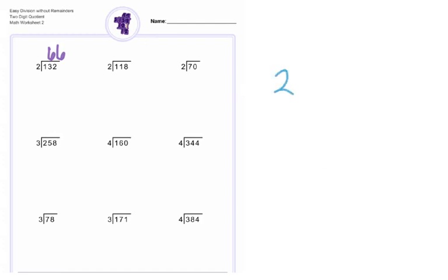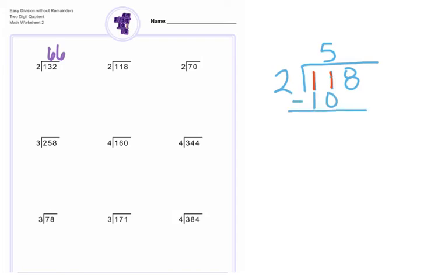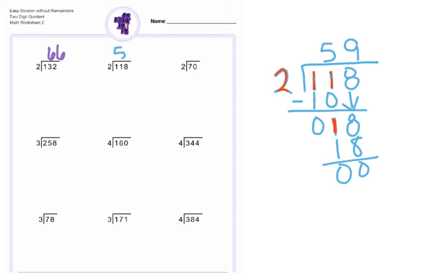Number two, we have 118 divided by two. Can two go into our first number, which is one? It cannot. So we look to the next one: how many times can two go into 11? Two can go into 11 five times because two times five is 10. We do our subtraction — one minus zero is one, and one minus one is zero. Check that the remainder is smaller than your divisor, which it is. Bring down your next number, which is eight. Two can go into 18 nine times because two times nine is 18, and 18 minus 18 is zero. No remainders. The answer for number two is 59.